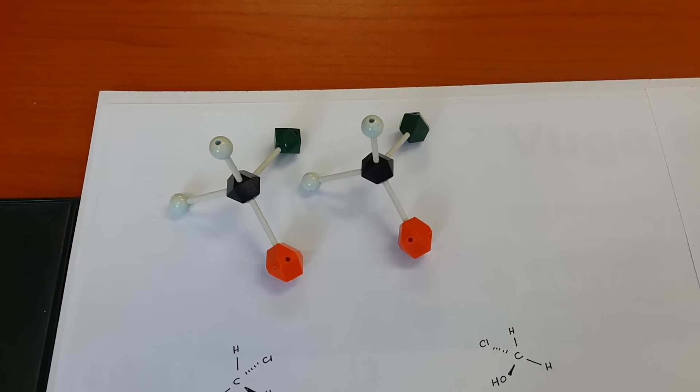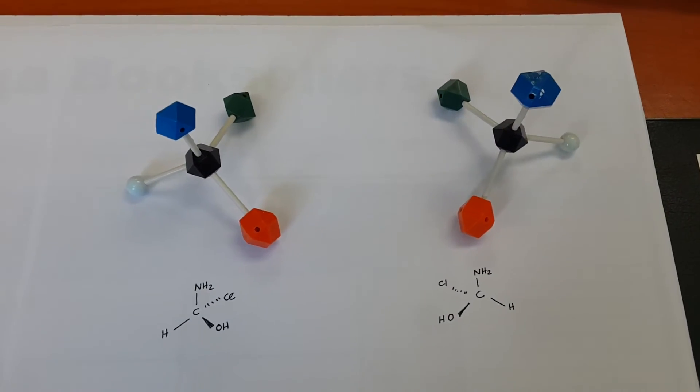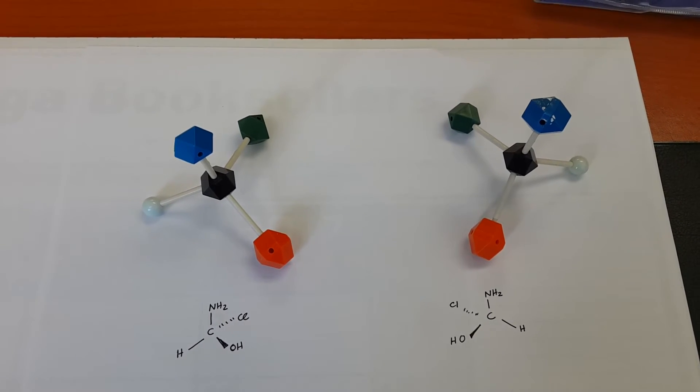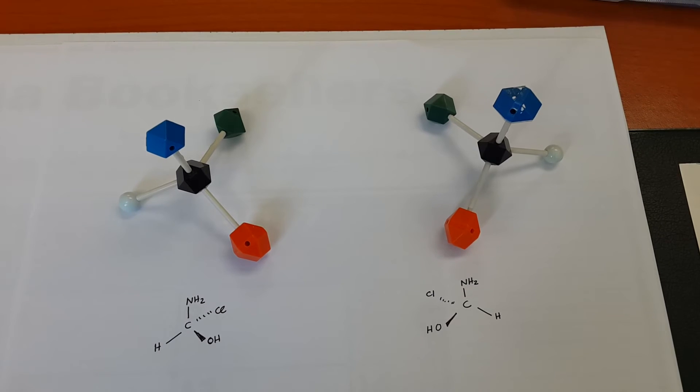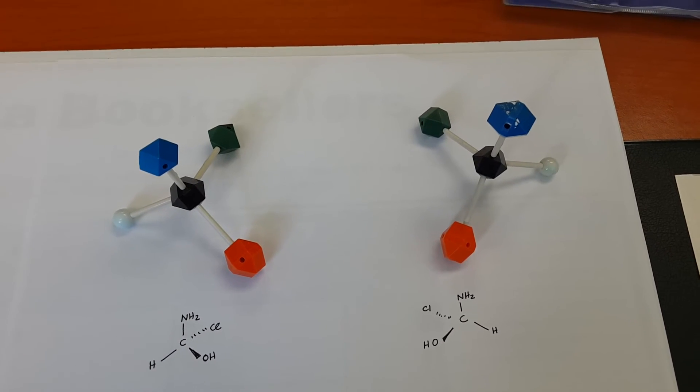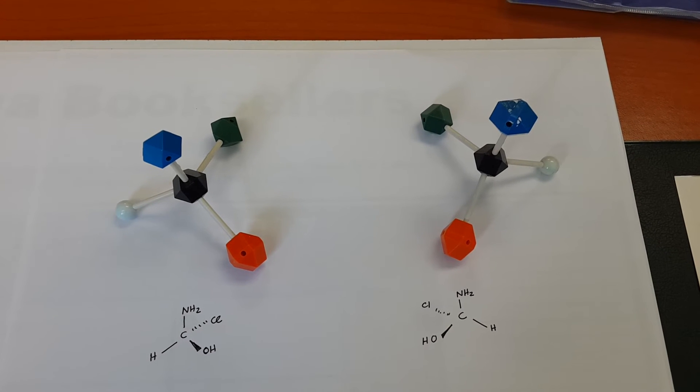Now what I want to do is draw your attention to another set of molecules. Here I've replaced one white ball with a blue atom, say an NH2 group. Now I have four different groups around my central carbon.